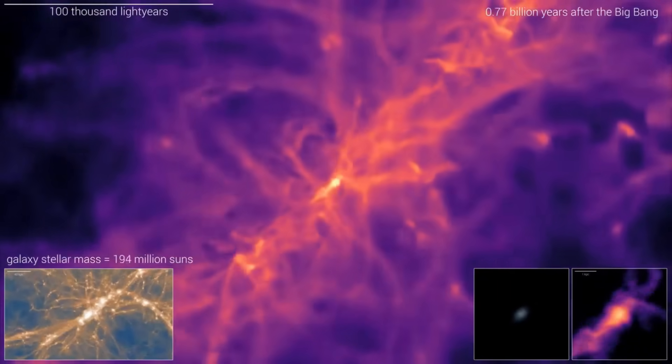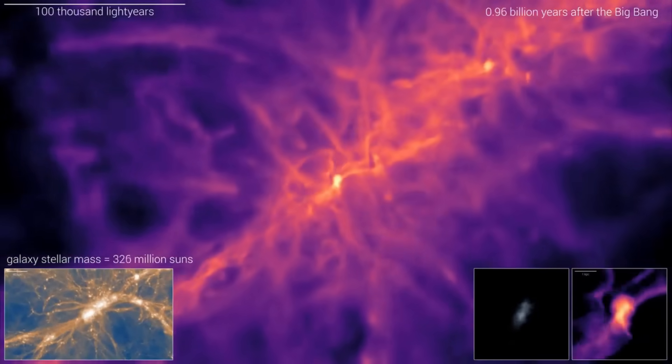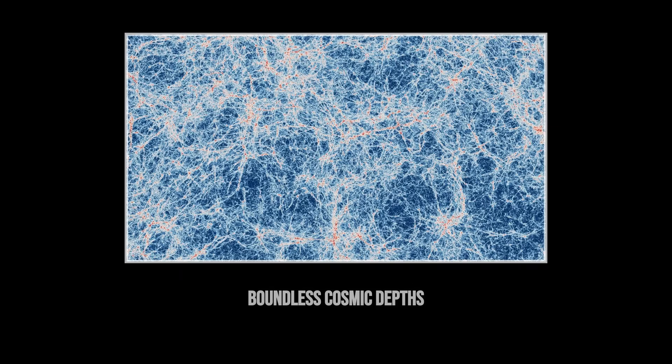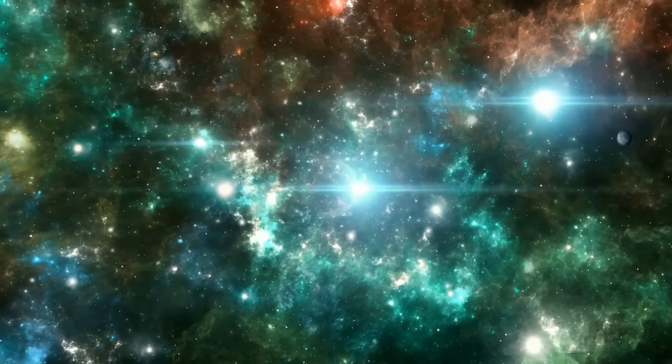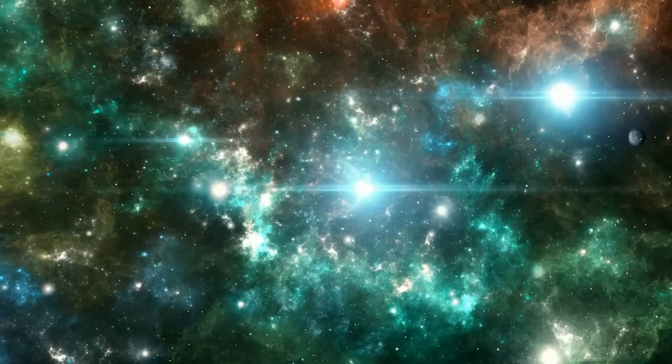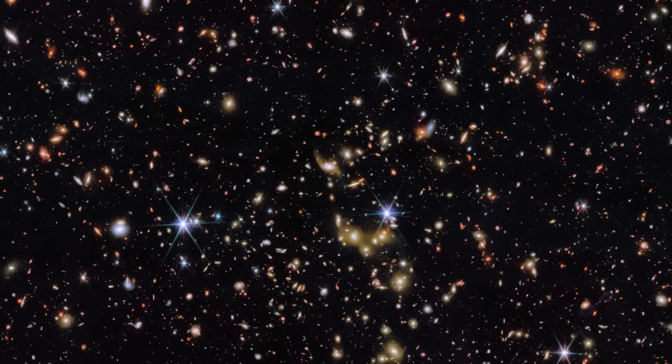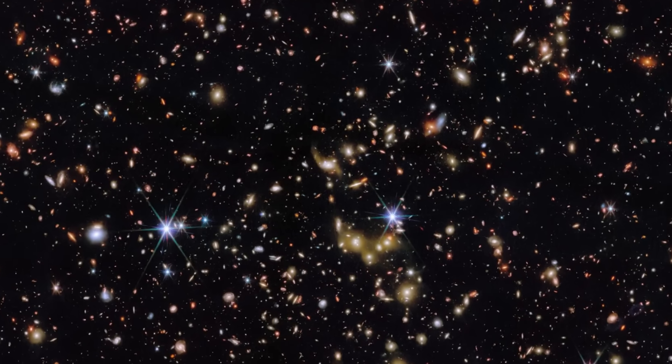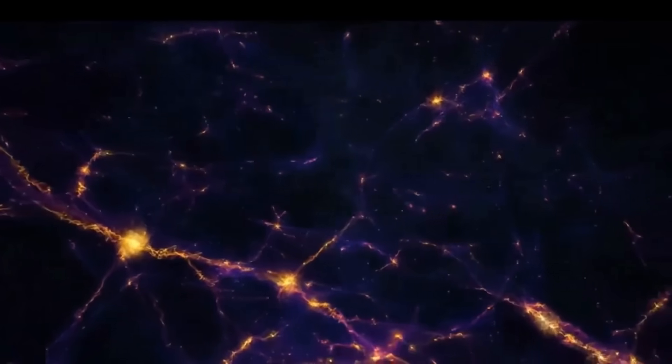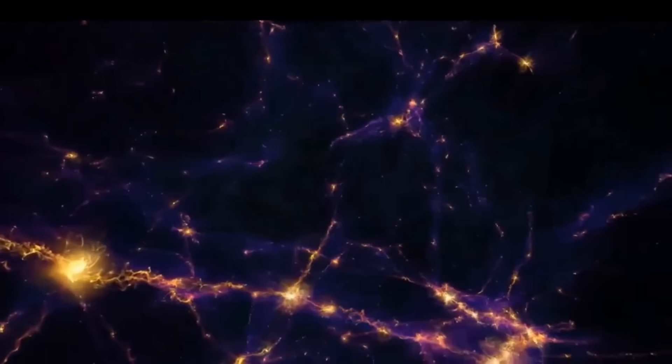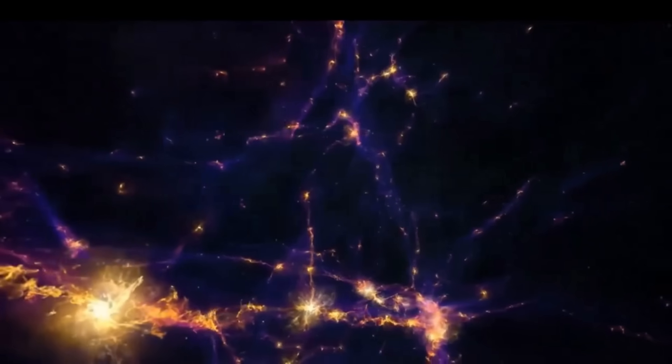How did galaxies and black holes grow so quickly? What role did dark matter and feedback processes play? The timeline for cosmic evolution is being rewritten with every new observation. Still, this map covers just a small patch of sky, reminding us that our universe is even larger and more complex than we once imagined, and much remains to be discovered.